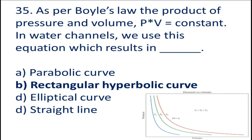Question number 35: As per Boyle's law, the product of pressure and volume, P × V = constant. In a water channel, we use this equation which results in a rectangular hyperbolic curve, parabolic curve, elliptical curve, or straight line.